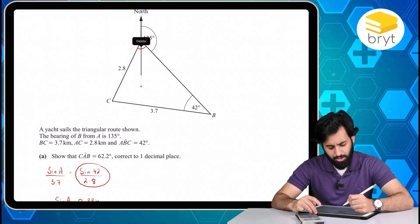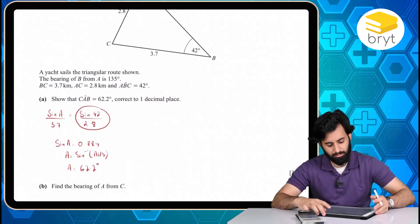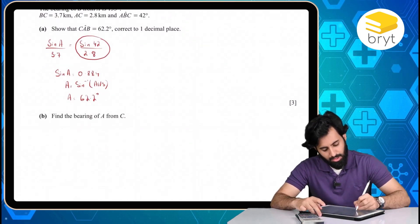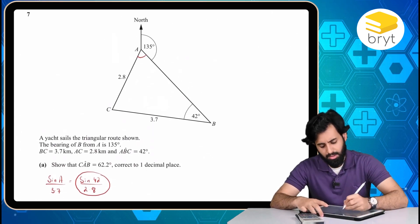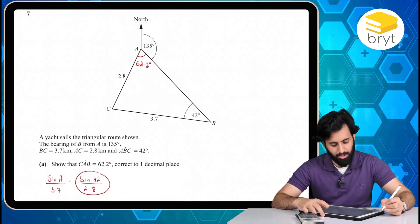So what I can do is, instead of working out the bearing of A from C, let's say I work out the bearing of C from A, because that's a lot easier, considering that we now have this angle, which is 62.2.